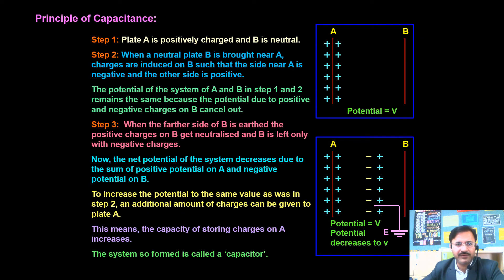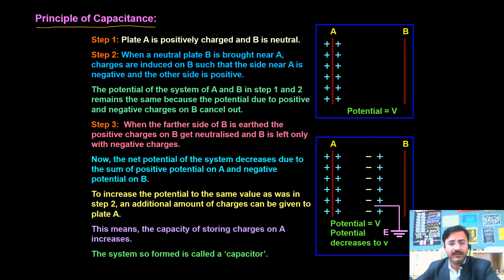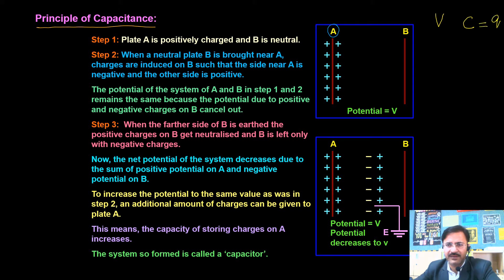Now we are going to deal with the principle of capacitance. We have a conductor with positive charge; its potential is V and capacitance is C. In general, C = Q/V. If we want to increase this capacitance, the only way is to decrease the electric potential.